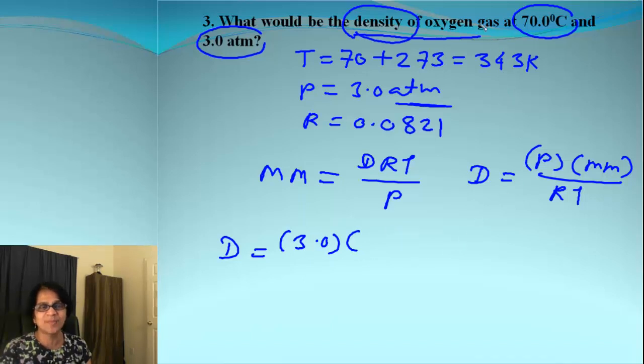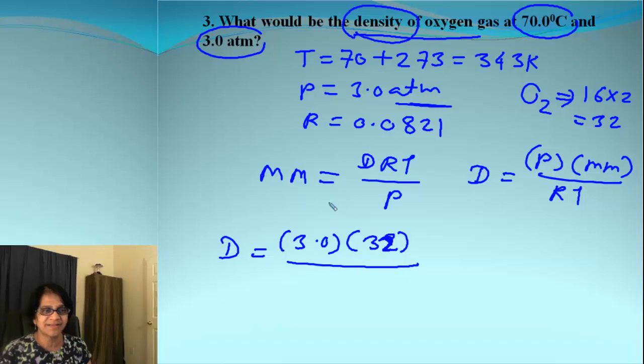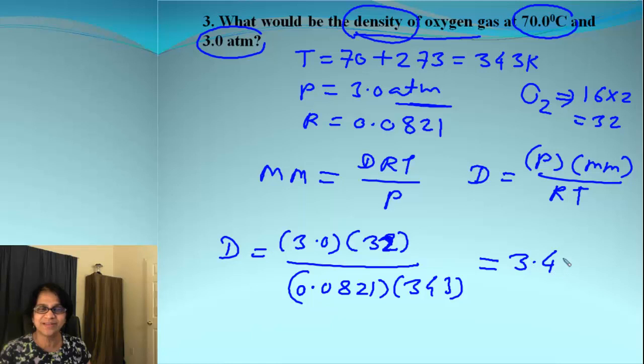Then we have molar mass for oxygen. How much is that? It's O2. If there are two atoms, then the molar mass will be 16 times 2, which is 32. So I got 32 as the molar mass. That divided by R. And right there, we have temperature T, which is 343. When we solve that, we end up getting 3.41 grams per liter.